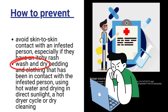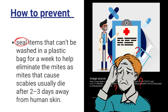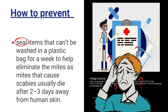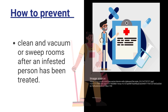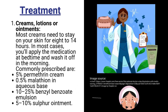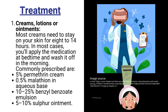Wash and dry bedding and clothing that has been in contact with the infested person using hot water and drying in direct sunlight, a hot dryer cycle, or dry cleaning. Seal items that can't be washed in a plastic bag for a week to help eliminate the mites, as mites usually die after two to three days away from human skin. Clean and vacuum or sweep rooms after an infested person has been treated.